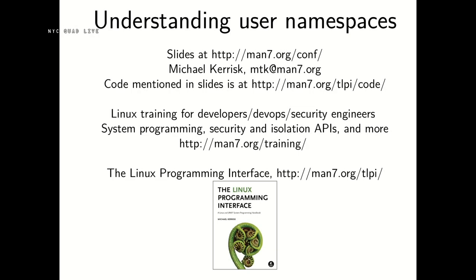Michael Kerrisk is a programmer, writer, and trainer who has a passion for investigating and explaining software systems. He is the author of the Linux Programming Interface, a widely acclaimed book on Linux and Unix system programming. He has been actively involved in the Linux development community since 2000, operating mainly in the area of testing, design review, and documentation of kernel user space interfaces. Since 2004, he has maintained the Linux Man Pages project, which provides the primary documentation for Linux system calls and C-library functions. Michael is a New Zealander living in Munich, Germany, from where he operates a training business at man7.org, providing low-level Linux programming courses primarily in Europe and occasionally in North America and further afield. Please welcome Michael Kerrisk, giving us Linux user namespaces.